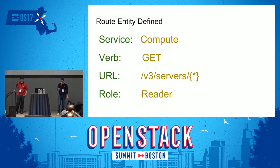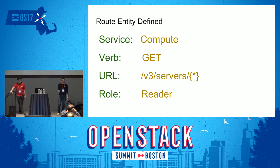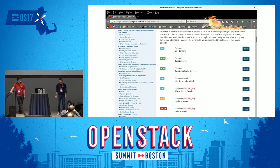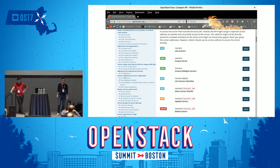For getting information about servers, you would call the v3 servers path with a GET, with service type compute. The role required is reader — but by expanding the implied roles, admin and member can also do this operation. How do you find which path and verb you need? It's all documented in the API references for all the projects, and you can programmatically fetch it and update your routes in bulk.